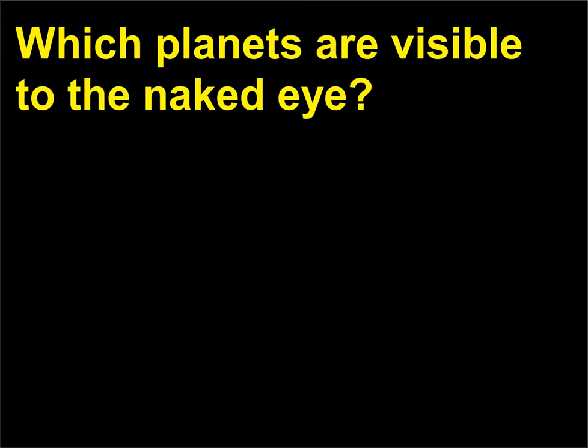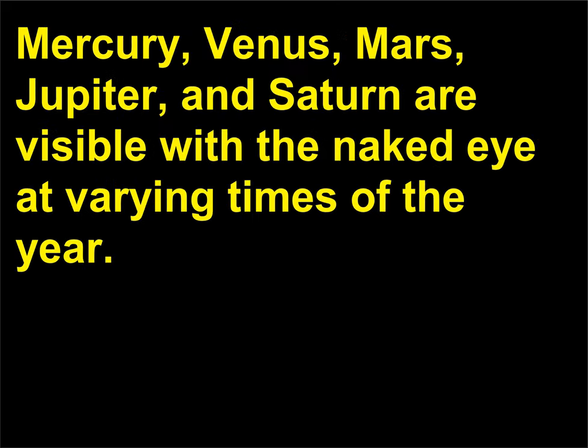Which planets are visible to the naked eye? Mercury, Venus, Mars, Jupiter, and Saturn are visible with the naked eye at varying times of the year.